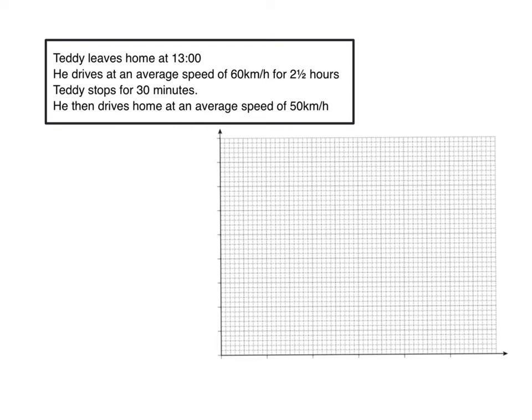This one here I've got to draw the graph, so it's probably best if I do my working first before I muck the graph up. So Teddy leaves home at 1:00, let's just get my highlighter out to start with. So he leaves home at 1:00, he drives an average speed of 60 kilometers per hour for two and a half hours, he stops for 30 minutes, he then drives home at an average speed of 50 kilometers per hour.